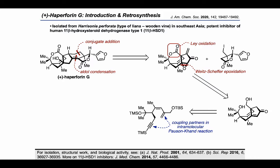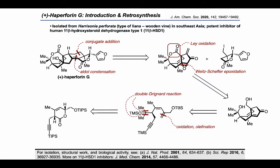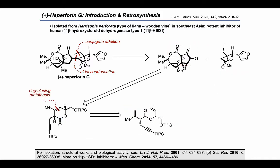The enyne intermediate was traced back retrosynthetically to a type of lactone, which the authors thought might be feasible if two methyl groups could be installed on the left using a double Grignard reaction, while the terminal alkene might be formed by oxidation and subsequent olefination of an alcohol motif. The alkene present in this lactone intermediate was viewed as the product of a ring-closing metathesis, which had come about starting from an acyclic precursor, where the authors proposed installation of the propargyl group by an asymmetric alkylation reaction.